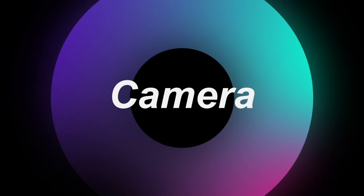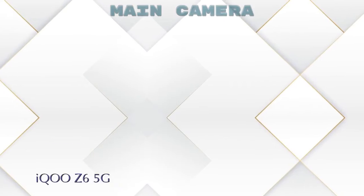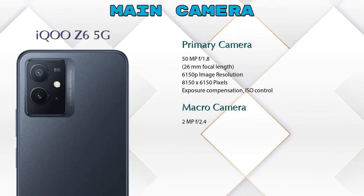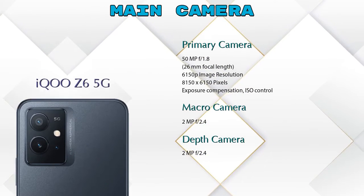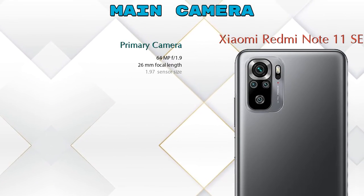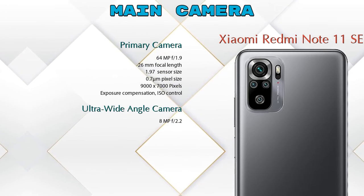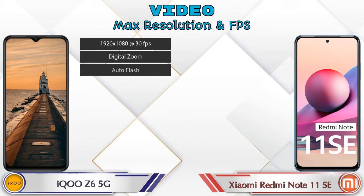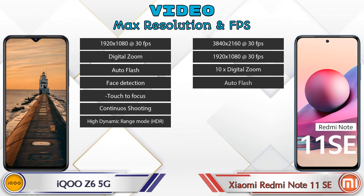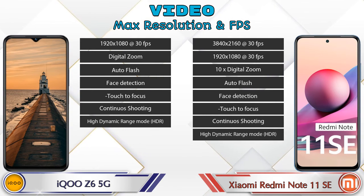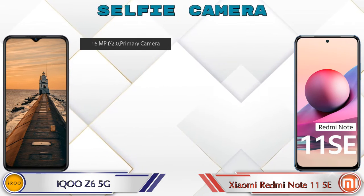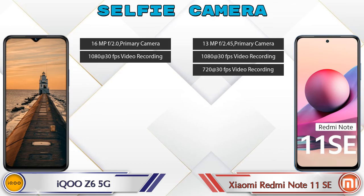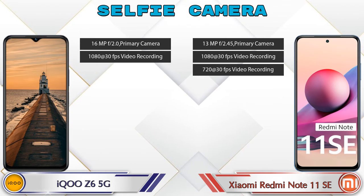Let's talk about cameras. For the rear camera, iQOO Z6 5G has three cameras — primary, macro, and depth — while Redmi Note 11 SE has four cameras: primary, ultra-wide angle, macro, and depth. For video, iQOO Z6 5G has seven and Redmi Note 11 SE has eight different feature types available. For the front selfie camera, iQOO Z6 5G has a single camera with two features, and Redmi Note 11 SE also has a single camera with three features.